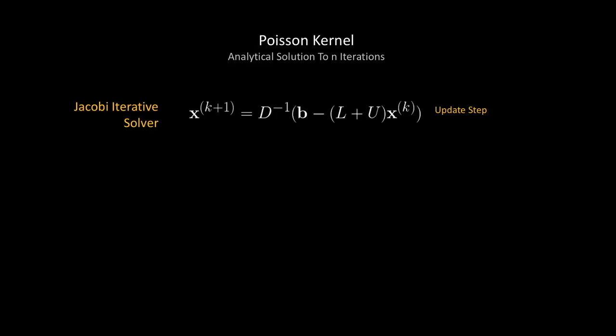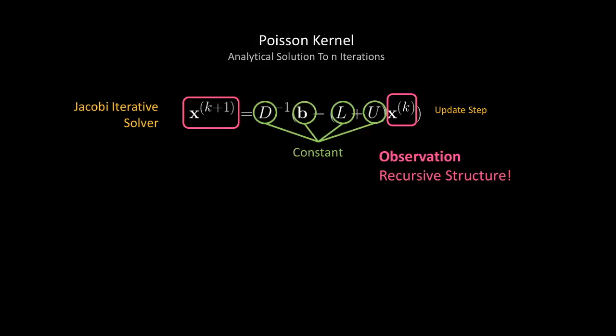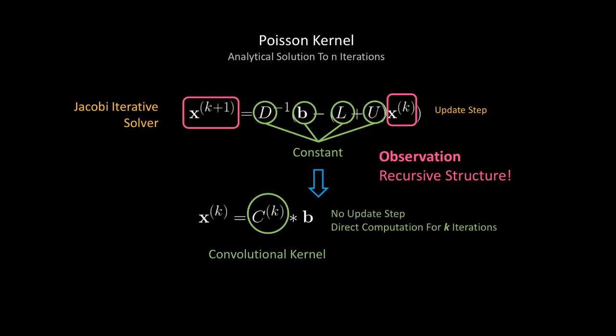If you look closely at the updated step, you would notice a recursive structure where x_k+1 always depends on its previous value, while everything else remains constant. So we can analytically compute the convolutional kernel that exactly matches the target Jacobi iteration. This effectively replaces the iterative solver with one-time convolution.